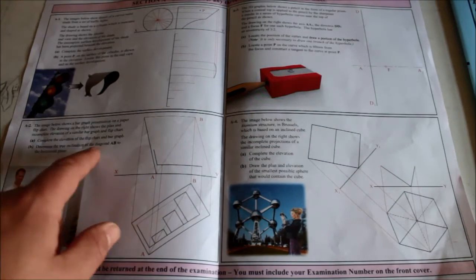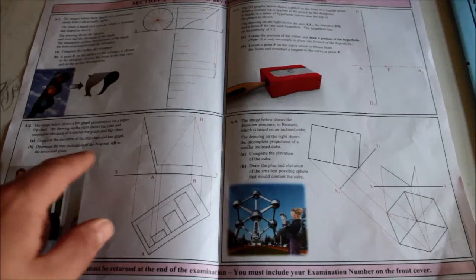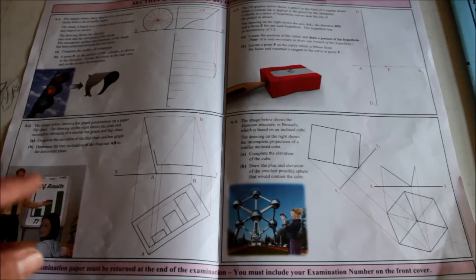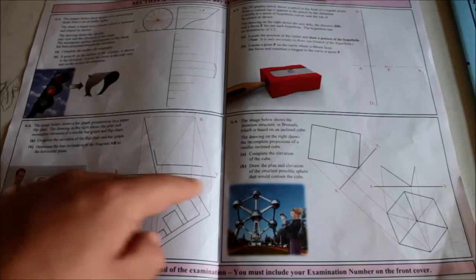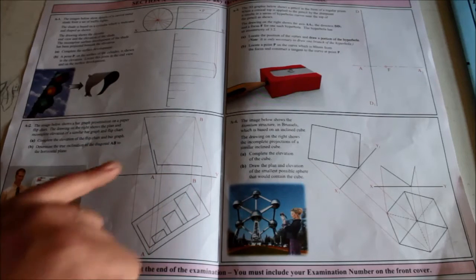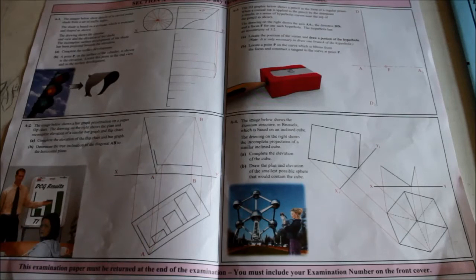Even part B: determine true inclination of the hedron angle, the diagonal A-B to the horizontal plane. That's just rotation. Rotate A up to your parallel to the X-Y line, put it into your elevation, show the true inclination. Section A, everyone should have been delighted with that, I hope.